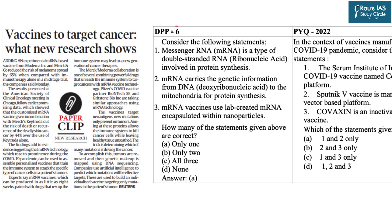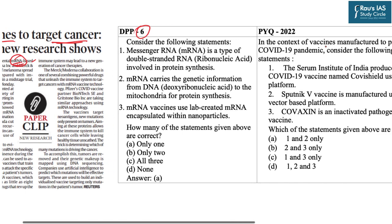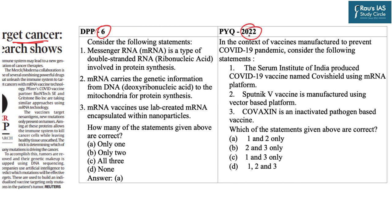DPP question number six is in relation to vaccines to target cancers. The immediate context is that there are ongoing researches and experiments related to mRNA-based vaccines, with certain organizations coming up with new studies. The concept of mRNA is important — questions were asked in 2022 prelims in relation to the mRNA platform and vaccines like Sputnik, Covaxin, and Covishield. Related topics appearing in newspapers automatically become important.